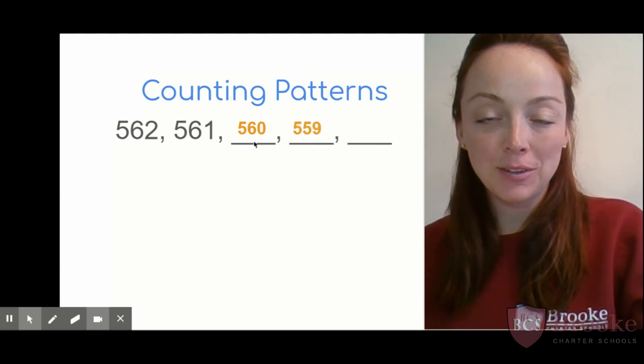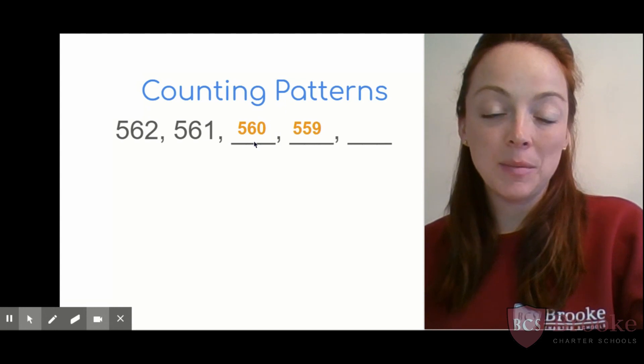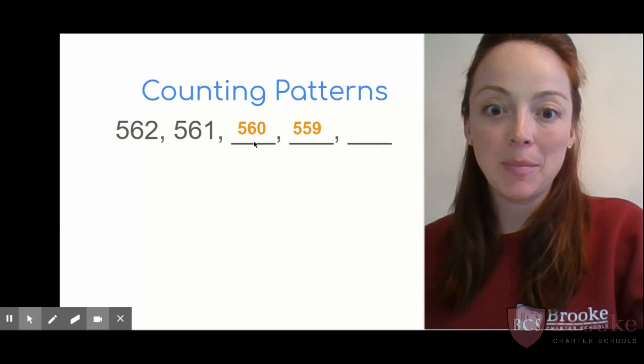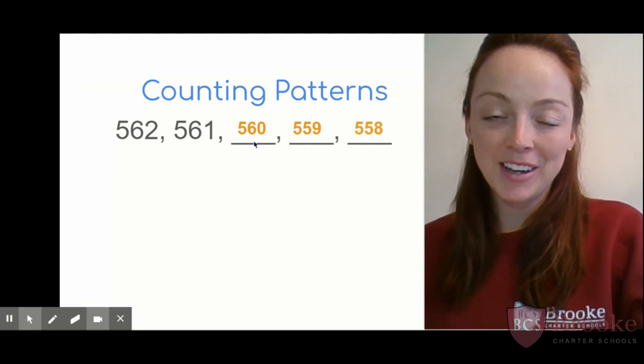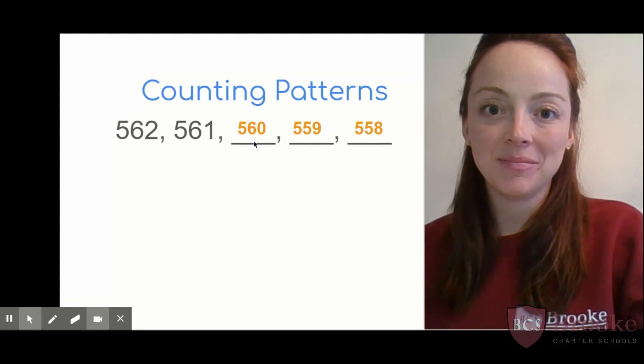Let's count down together. 562, 561, 560. What's next as I count down by ones? You got it, 559. Because if I'm at 60 and I take away one, I go to 59. Last in the pattern would be? Good, 558. You got it. Next pattern.